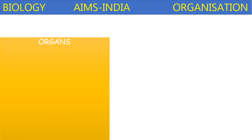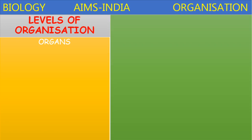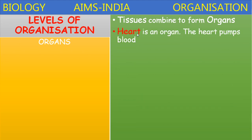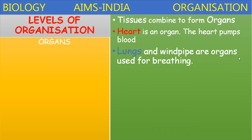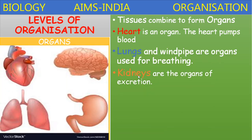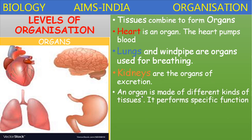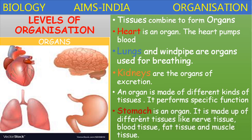Let us discuss in detail about the further level of organization — organ level. Tissues combine to form organs. Heart is an organ; the heart pumps blood. Lungs and windpipe are organs used for breathing. Kidneys are the organs for excretion. An organ is made up of different kinds of tissues and performs a specific function. Stomach is an organ made up of different types of tissues like nerve tissue, blood tissue, fat tissue, and muscle tissue. Different organs are made up of different types of tissues and perform different functions.